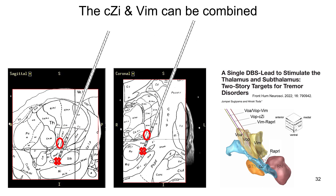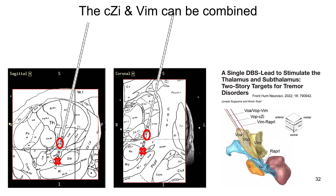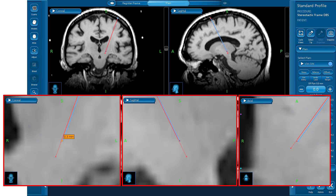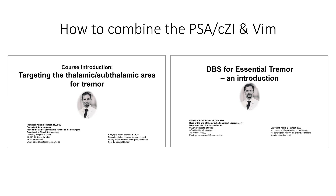It is possible to combine the ATLAS target in the VIM with the visual target in the PSA in about 9 patients out of 10. It is an advantage to have an entry point slightly behind the coronal suture or in the middle of it. Here we have a case where the trajectory for the VIM in blue is coinciding nicely with the trajectory for the PSA in red. If you would like more information on how to combine these targets from a practical point of view, you will find all the details in the two lectures on the website.